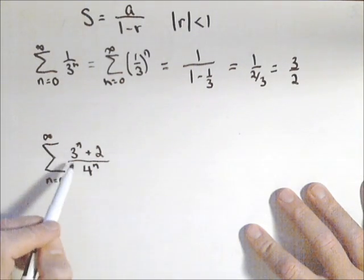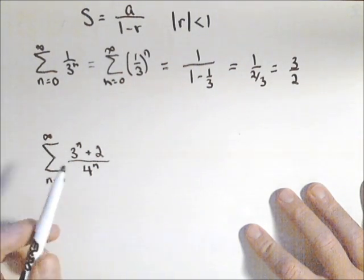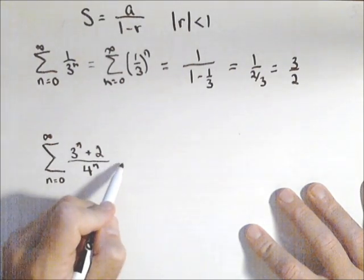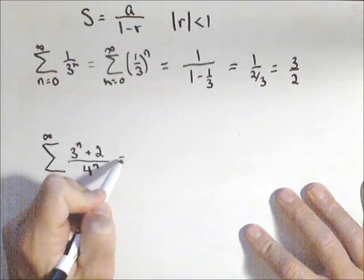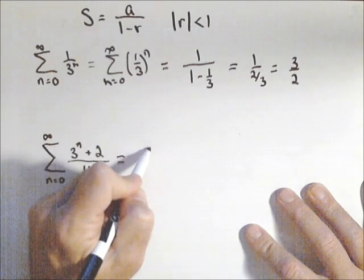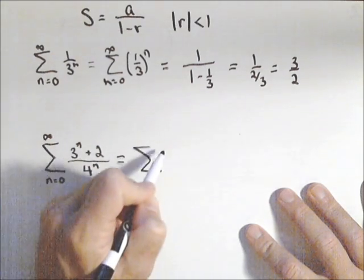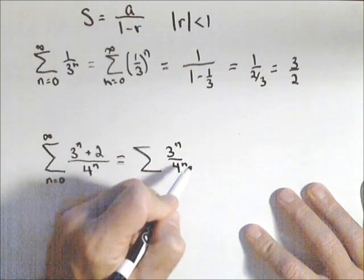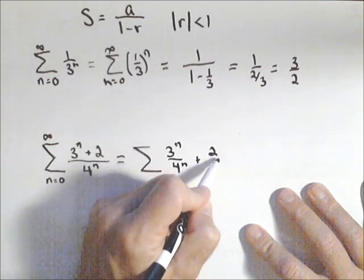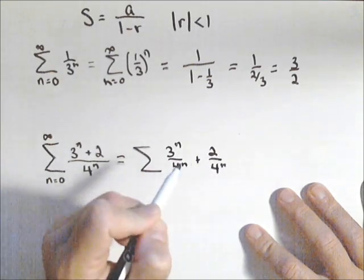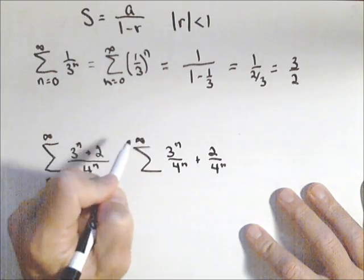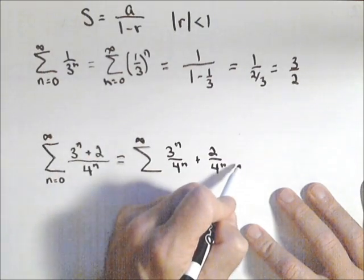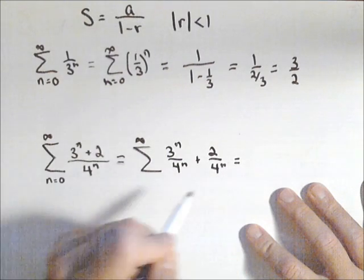Now this one if you start to do out terms as written this is not going to be geometric because you won't see a common ratio. But properties of sums are going to be applied here because what I can do is split this up. 3 to the n over 4 to the n plus 2 over 4 to the n. Still an infinite.